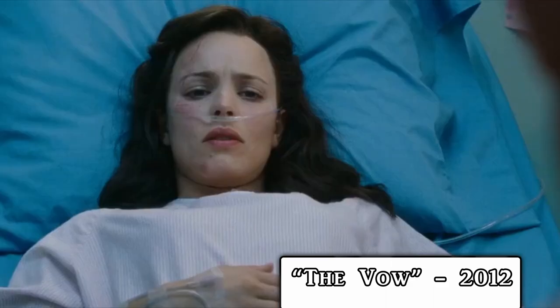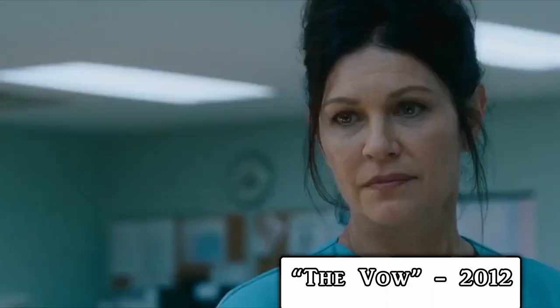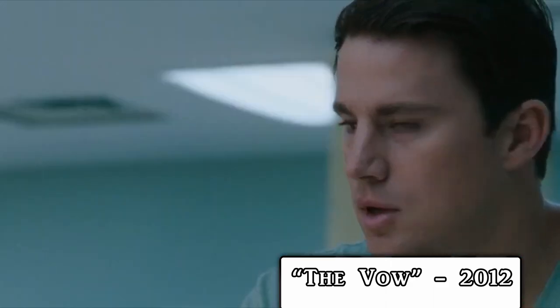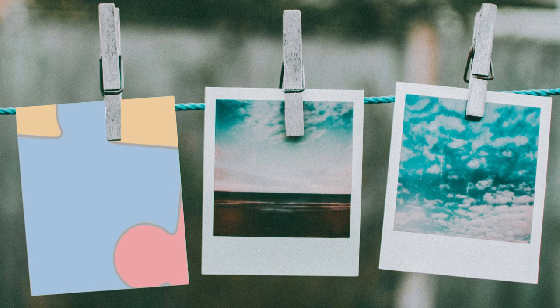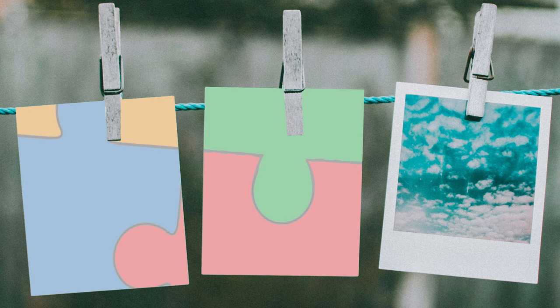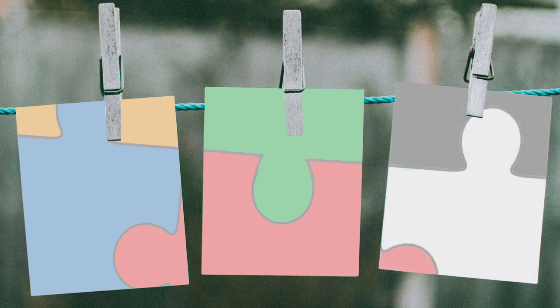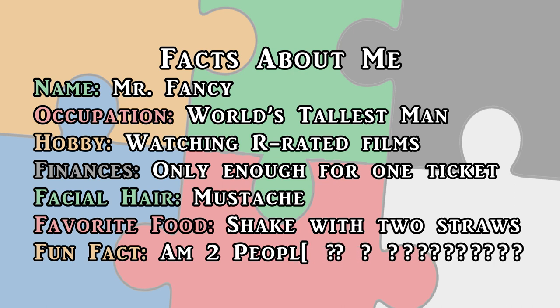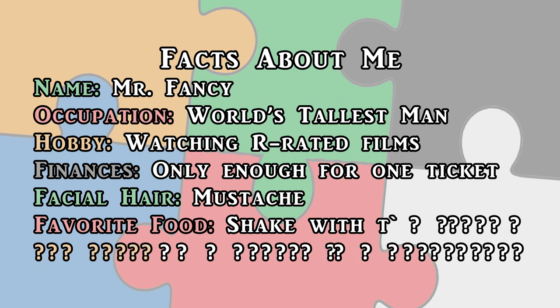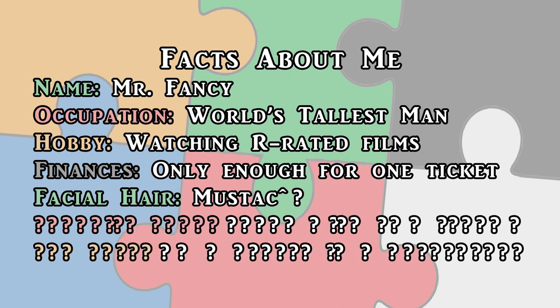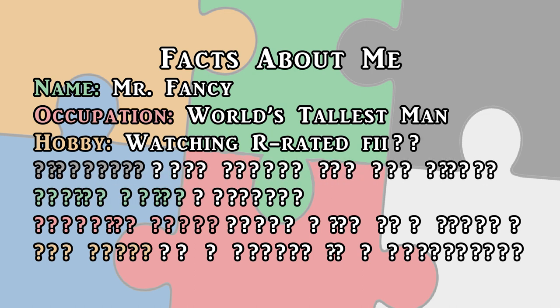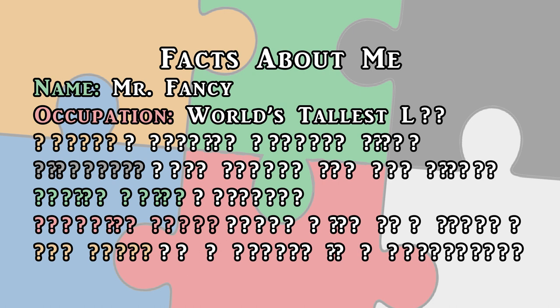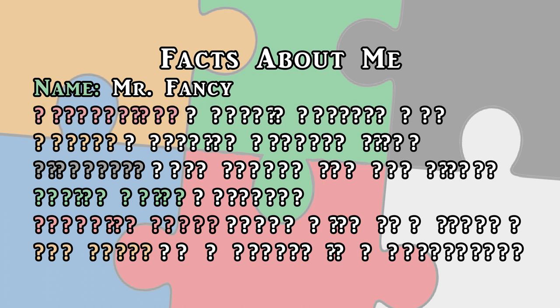In mild cases, the person may just forget a small number of episodic memories that occurred recently. As cases of retrograde amnesia become more severe, more memories, and memories from longer ago, begin to be affected. Semantic memories are often forgotten as well, but generally to a lesser extent than episodic memories. A typical person with retrograde amnesia will retain at least some semantic information about themselves, such as their name.